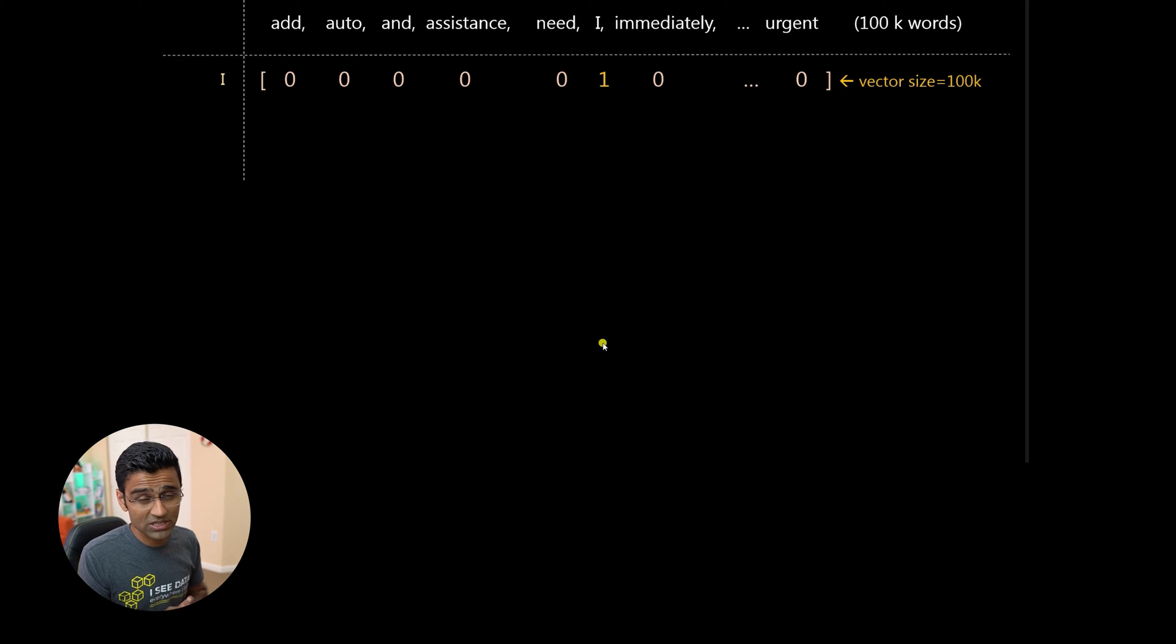The second disadvantage is, let's say in my vocabulary, I have 100,000 words. In that case, you would have already sensed that each word will occupy the size of 100K. The vector for each word would be 100K. That's too much memory. And that is just one word. What if I have an email that has 500 words in it?